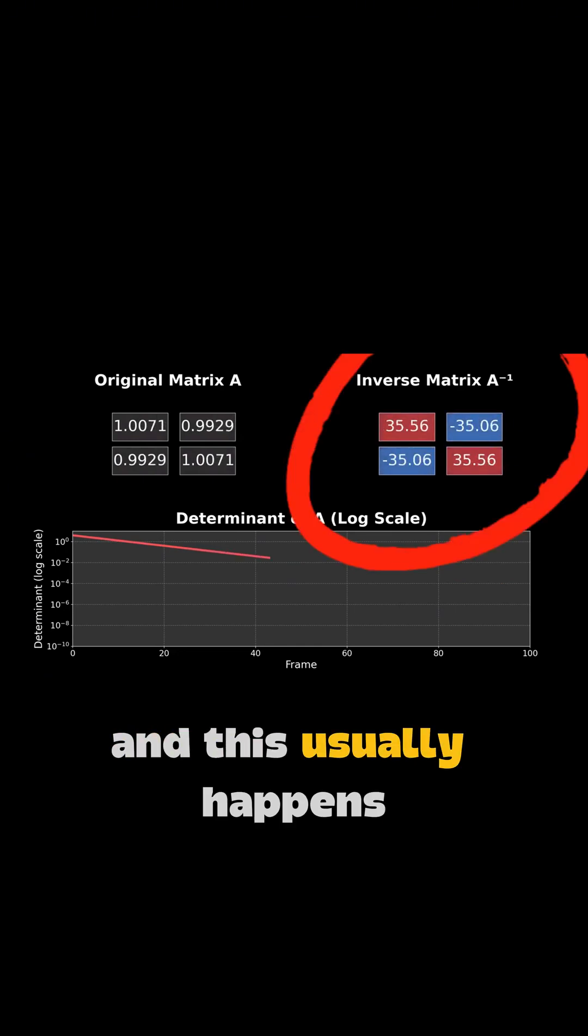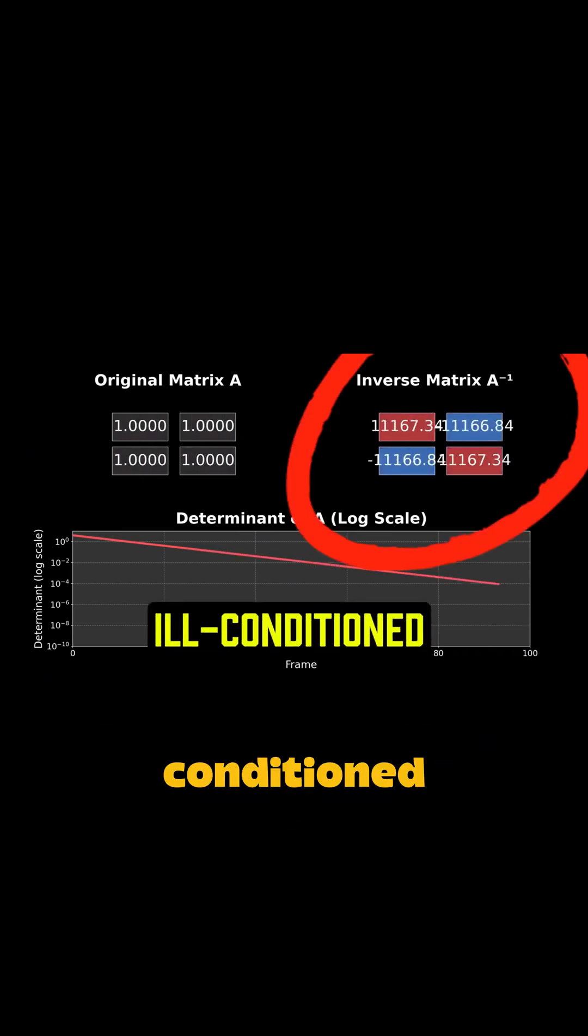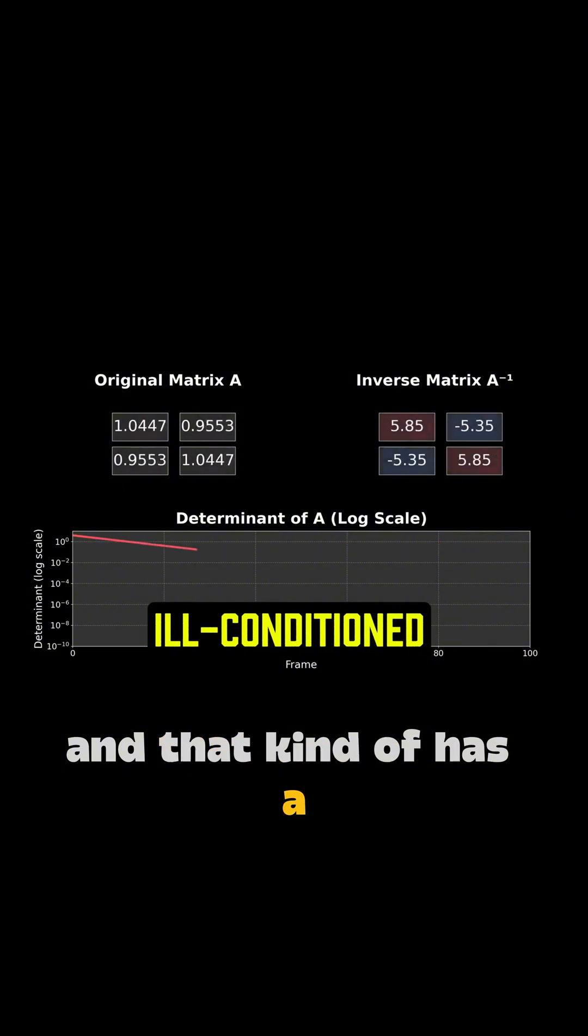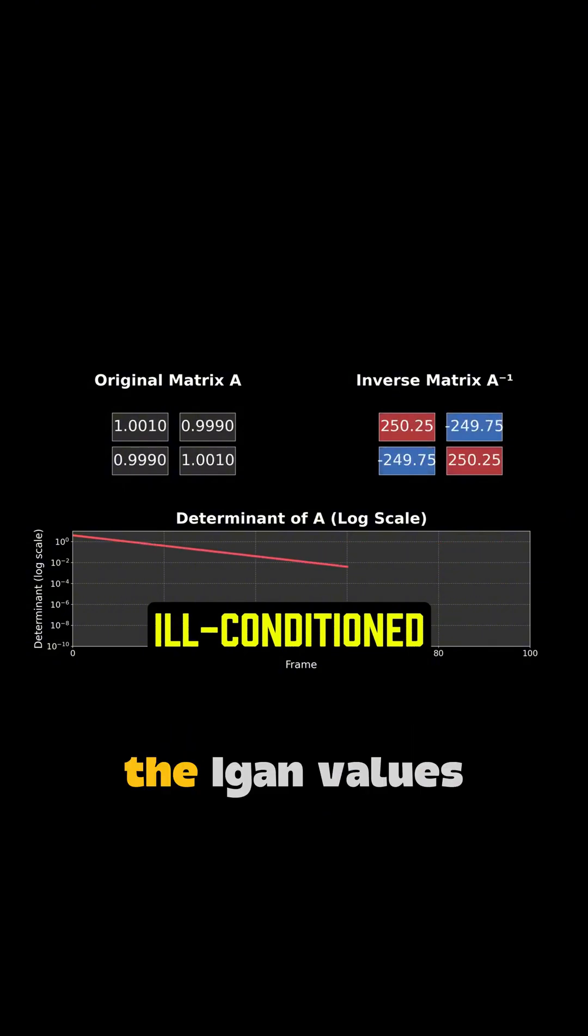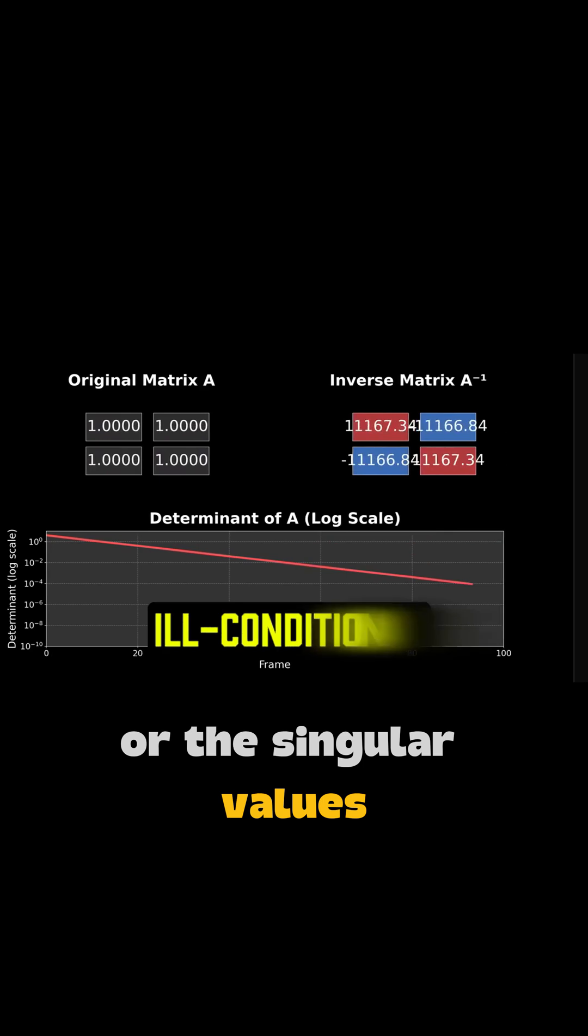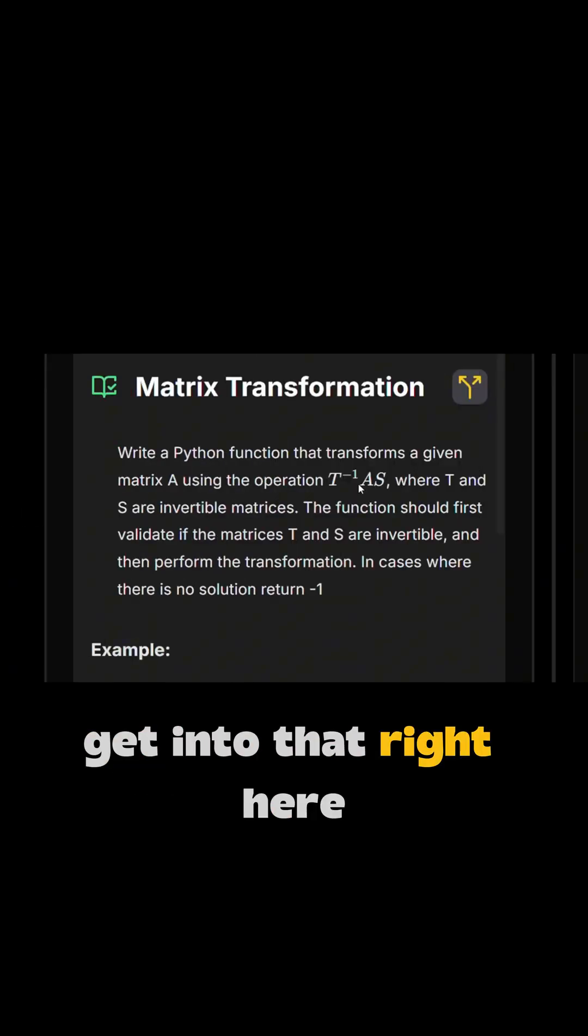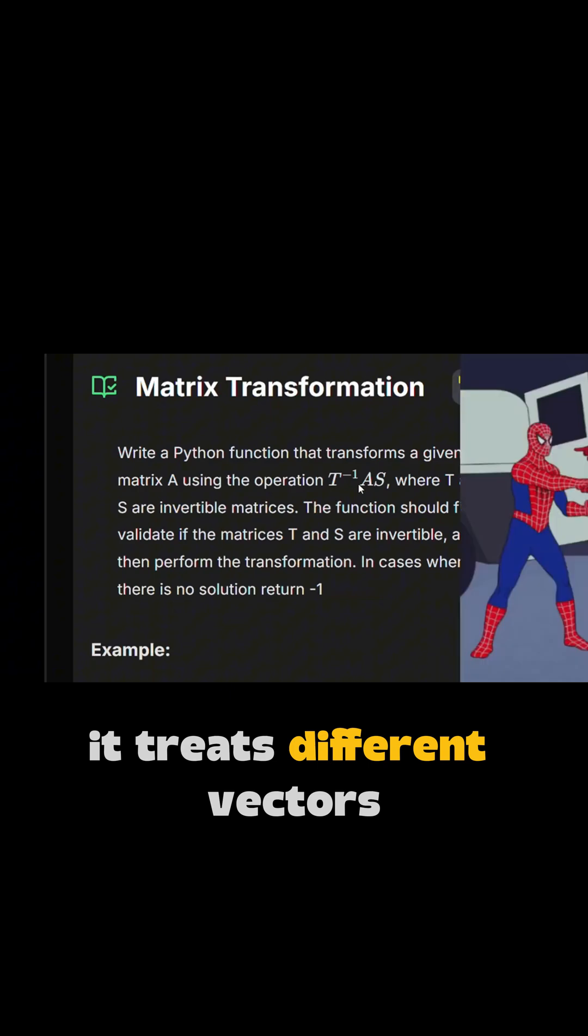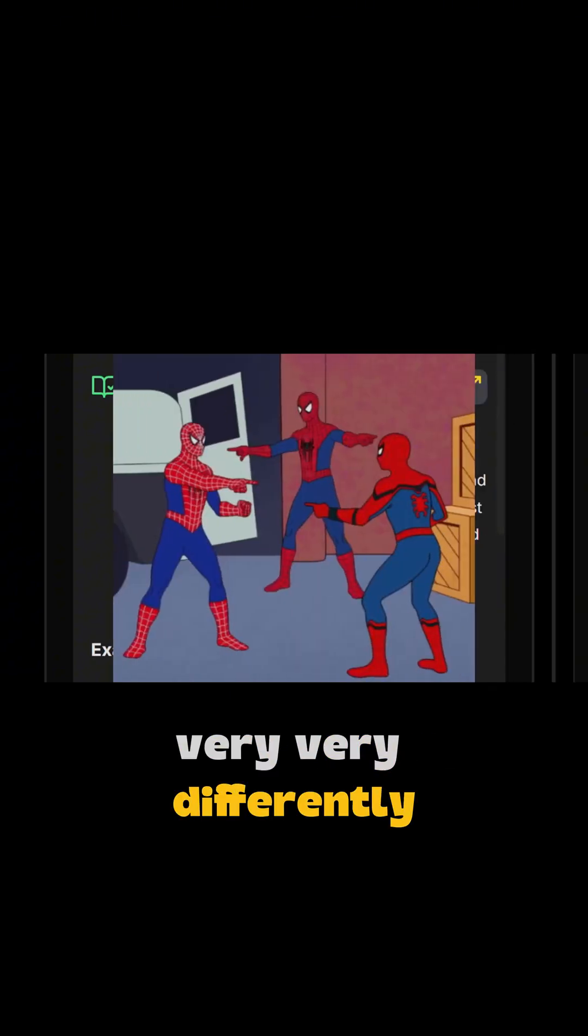And this usually happens when your matrix is ill conditioned, and that kind of has a more deep meaning of the eigenvalues or the singular values. We're not gonna get into that right here, but what it means is that it treats different vectors very, very differently.